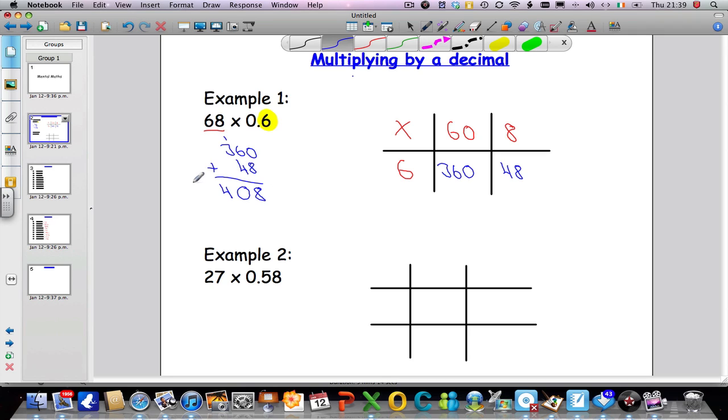And we always count from right to left, so counting in this direction here, count the number of decimal places, 1. So I'm going to put my decimal point there. And 68 multiplied by 0.6 is 40.8. Check it with a calculator if you like.